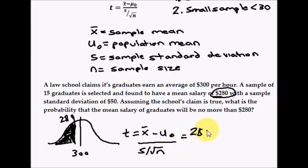So that's our x-bar. We're going to subtract the population mean, which is given in the question, as $300.